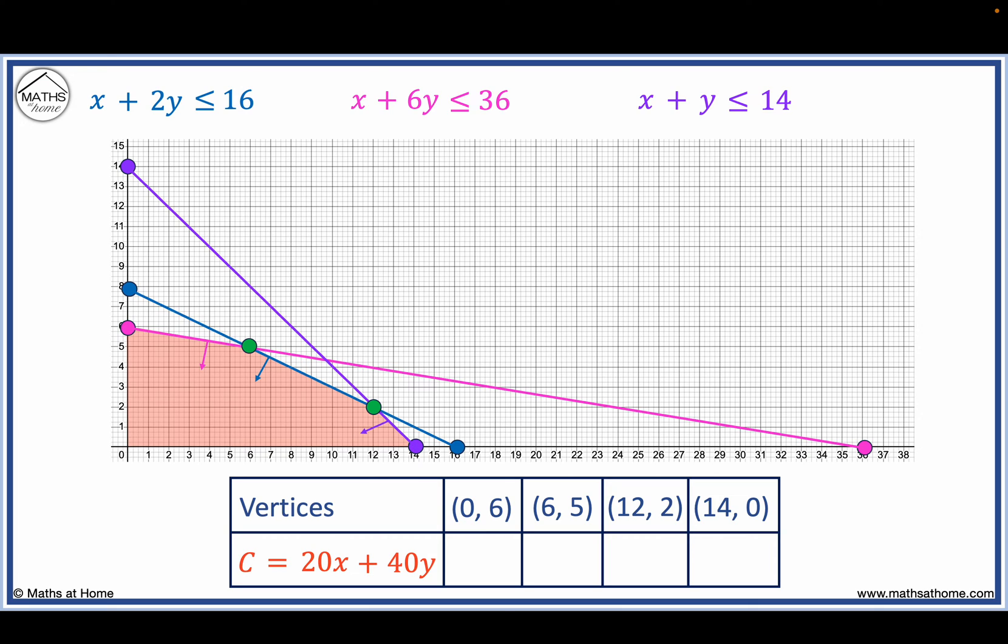We substitute these coordinates into the objective function to find the maximum value. When x equals 0, y equals 6, 20 times 0 plus 40 times 6 equals 240.